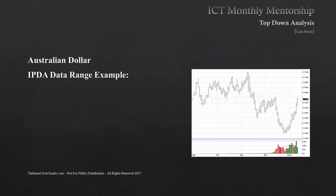We're going to be looking at an IPTA data range example and we'll be focusing on the Australian dollar. We've had a little bit of a run-up on Aussie and we're going to break this down in context — why I was expecting the levels we're looking at now to be hit, looking at the charts we share on the forum. If you're not paying attention to those charts or saving them, it might be a good idea while we're doing this month.